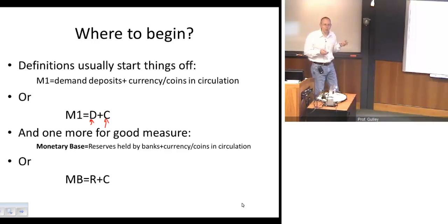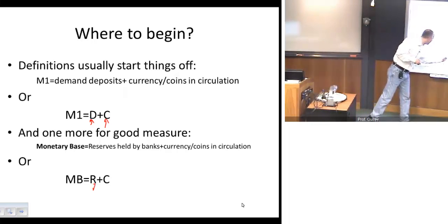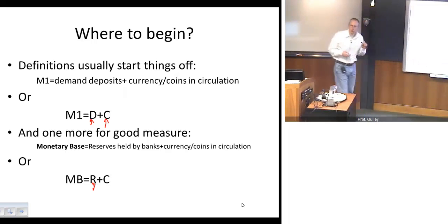And we do need one more definition here to get us started. We need what's called the monetary base. The monetary base are total reserves held by banks plus coins and currency in circulation. Notice that coins and currency in circulation shows up in both definitions here. And so again, we'll shorten this down for convenience. We're going to let capital R stand for reserves that are held by banks. And what we'll discover in a few minutes is that we will differentiate between reserves that banks have to hold, required to hold, and reserves that banks don't have to hold, that they hold in excess of what's required.